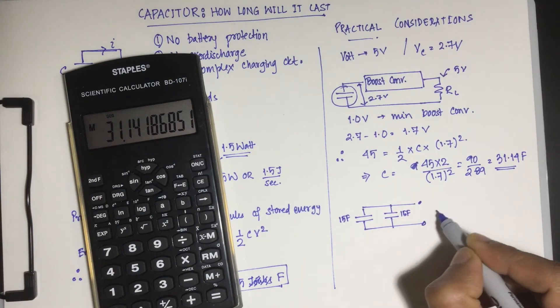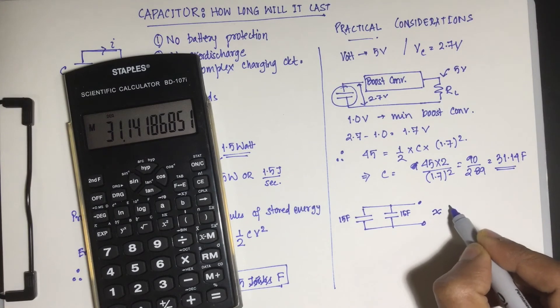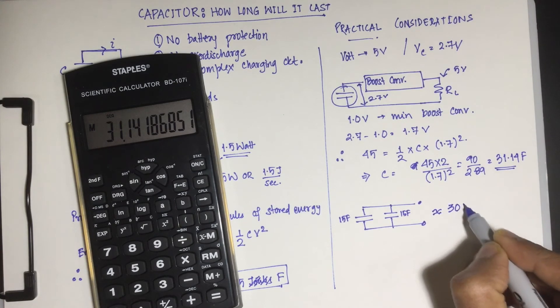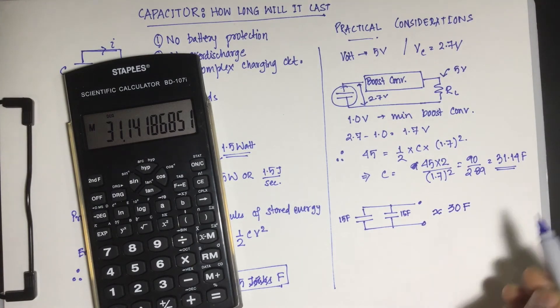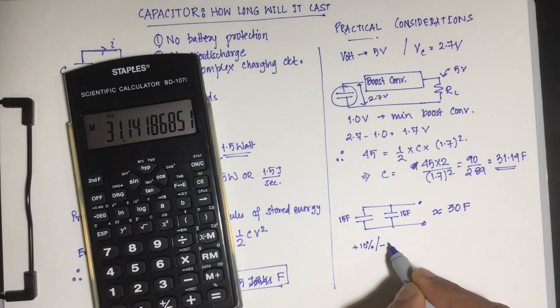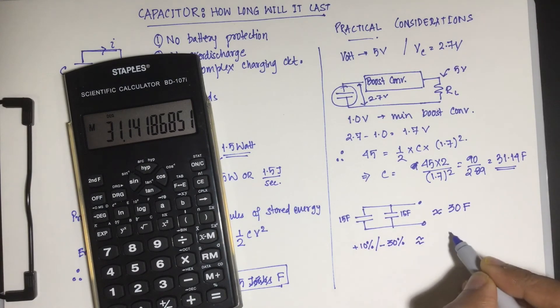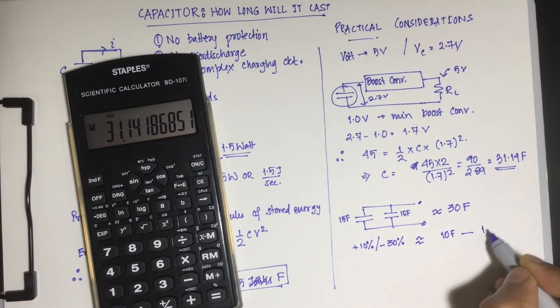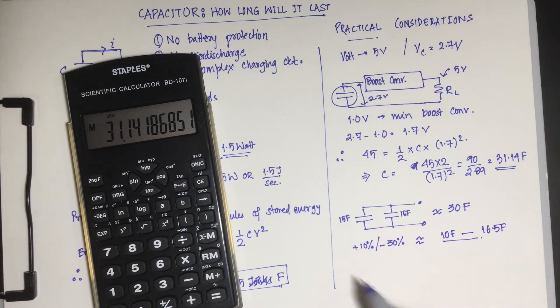Perfect. No, still one more thing. The real capacitors are not exact value, so plus 10 percent to minus 30 percent is what the data sheet says for the super cap that I have. So that could mean anywhere between 10 farads to 16.5 farads for a 15 farad capacitor.